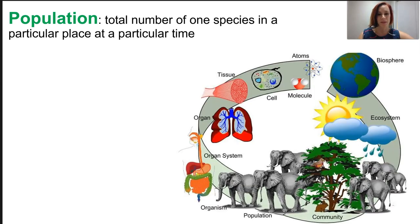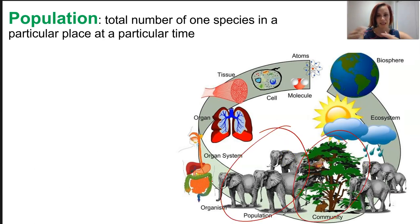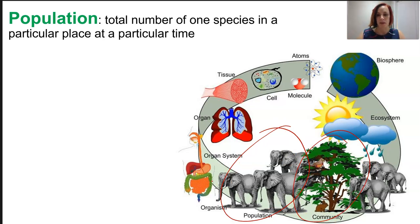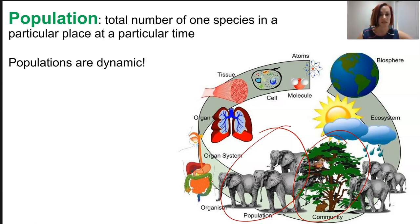Many populations of different species make up a community. So if we're looking at how these things fit together, a population is just one type of species, and many populations make up a community. Populations are dynamic — they change size and demographics over years and over seasons.